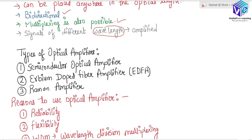As mentioned, we have three types of optical amplifier. First is the semiconductor optical amplifier. Then we have the Erbium Doped Fiber Amplifier (EDFA). And at last we have the Raman amplifier.